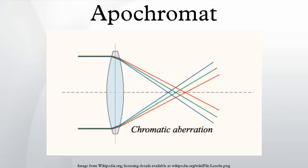An apochromat, or apochromatic lens, is a photographic or other lens that has better correction of chromatic and spherical aberration than the much more common achromat lenses.